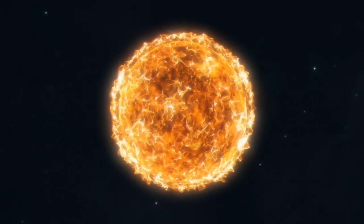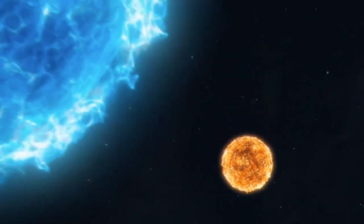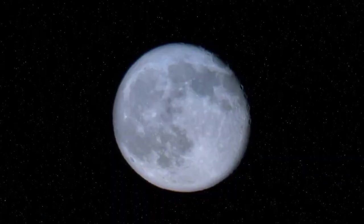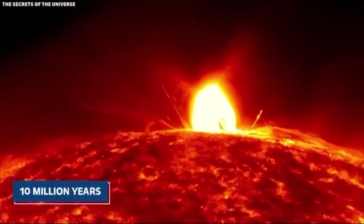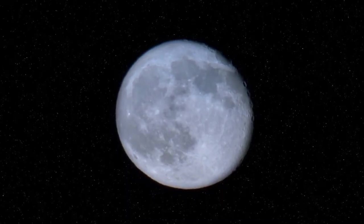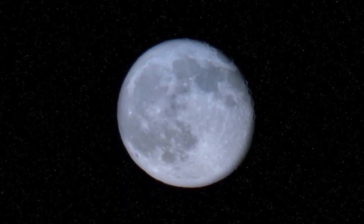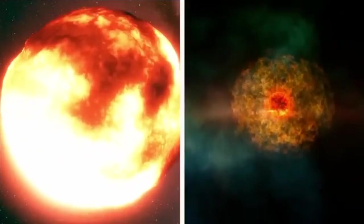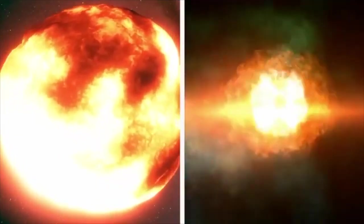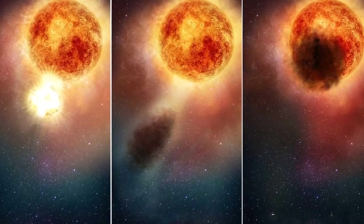In the vast expanse of the cosmos, the tale of Betelgeuse beckons. Located a staggering 650 light-years away in the heart of the Orion constellation, this isn't just any celestial body. It's a red supergiant, radiating with a brilliance over 100,000 times our own sun.